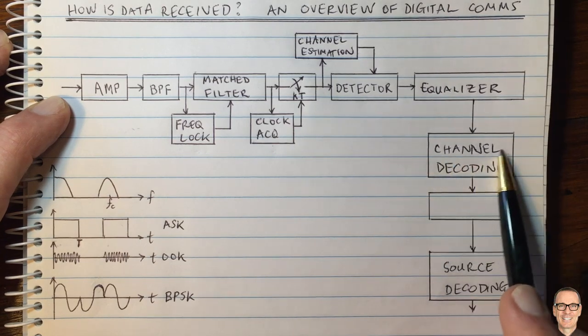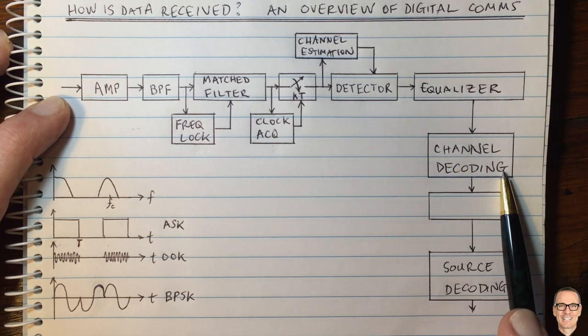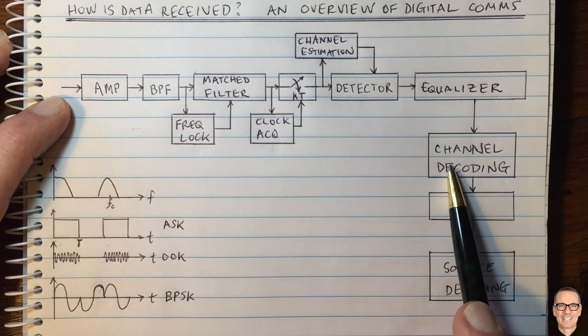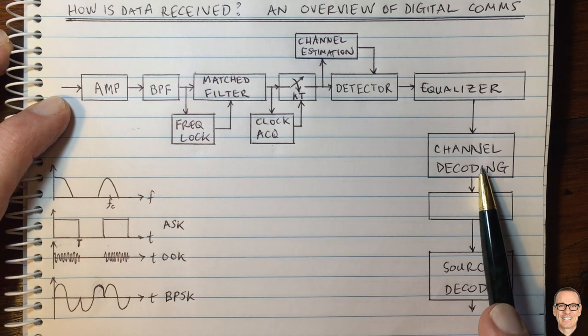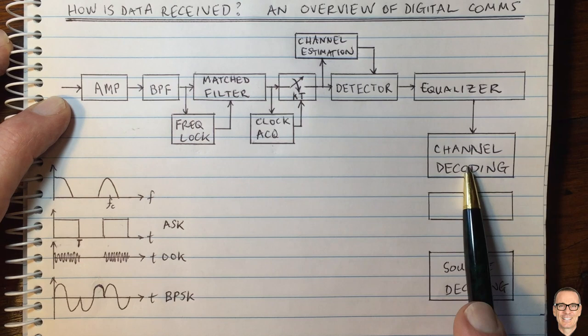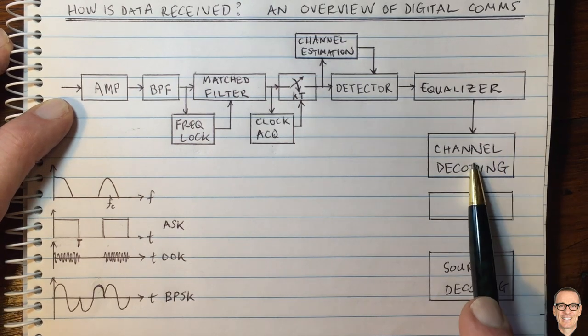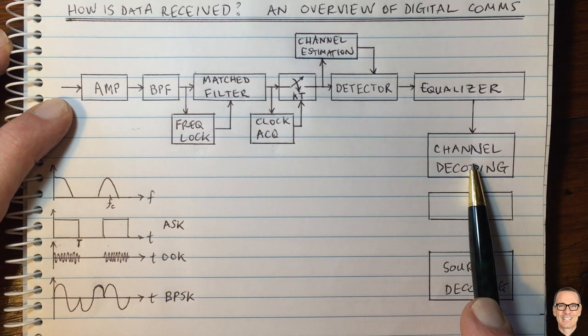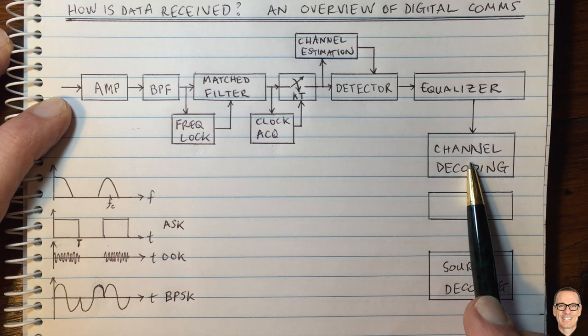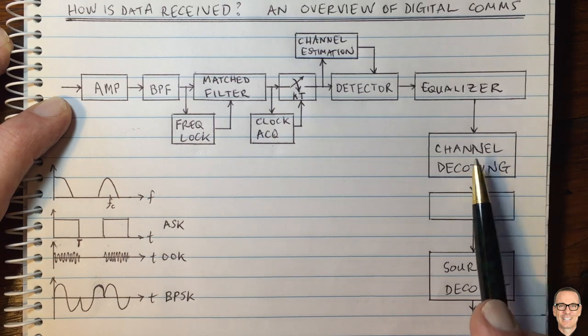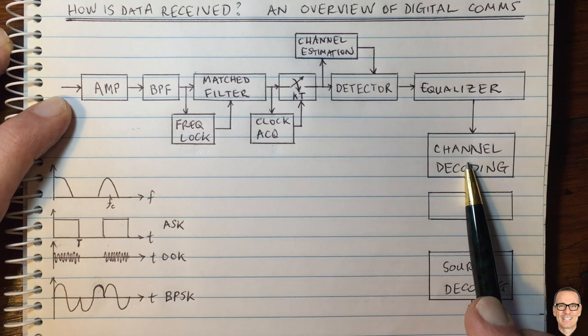The next process is to decode those data bits and try to correct any errors that might have happened. To do this, we need to find where the start of our blocks are. Often channel encoding is done on a block basis. Even if it's a convolutional encoder, you still need to find where the start of the sequence is. We need block detection here.